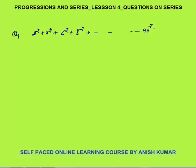Question 1: 2² plus 4² plus 6² plus 8² up to 40². How can you find the sum of this series? You cannot directly apply the formula of 1² plus 2² plus 3² up to n², because that formula is applicable only for the first n natural number squares, where the formula is n into n plus 1 into 2n plus 1 by 6. Here you do not have the first natural number squares.